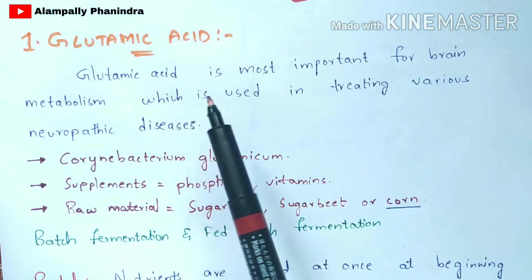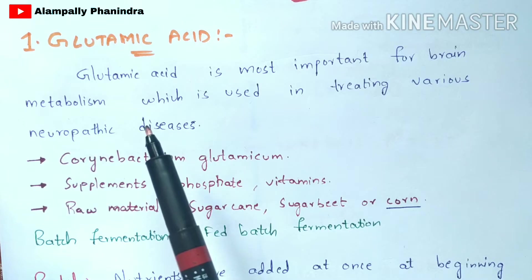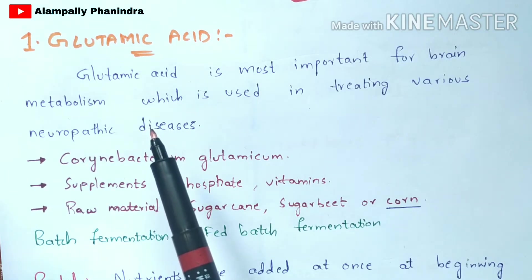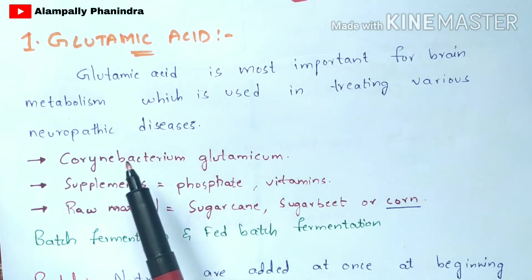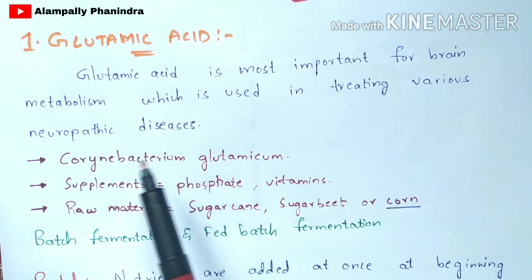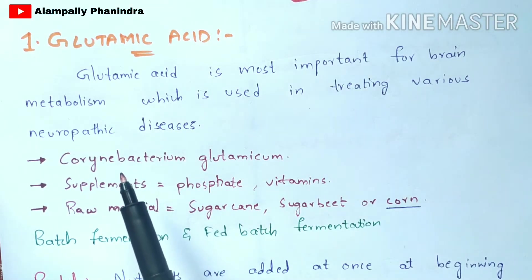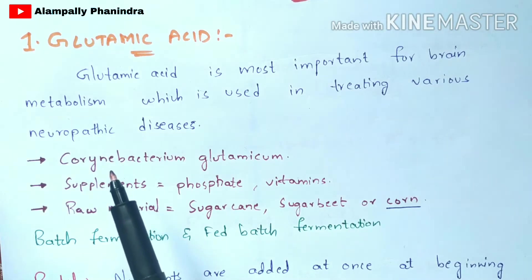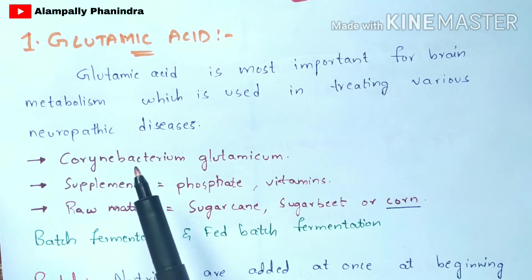Glutamic acid plays a major and vital role in the human body. The main microorganism used during the production of glutamic acid is Corynebacterium glutamicum. This microorganism is added during the fermentation process for the proper production of glutamic acid. The type of microorganism added during fermentation depends on the type of organic acid being produced.